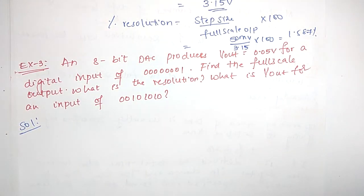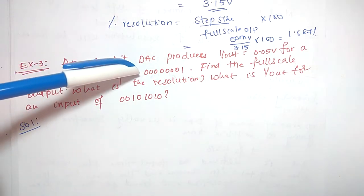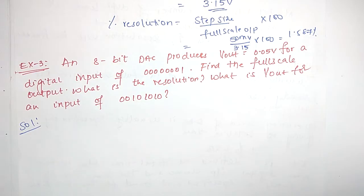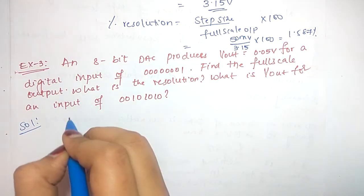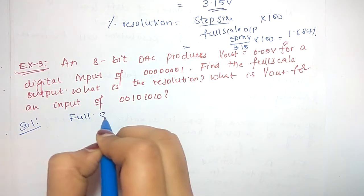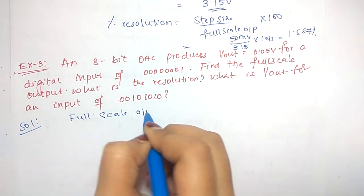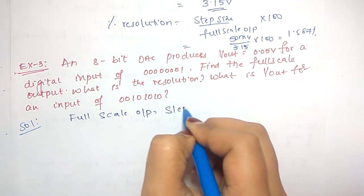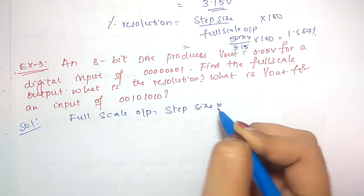An 8-bit DAC produces output voltage Vout equal to 0.05V for a digital input of 00000001, which is equivalent to decimal 1. Find the full scale output, the resolution, and Vout for an input of 00101010. Generally, full scale output equals step size into number of steps.